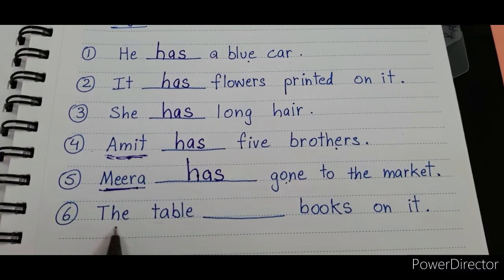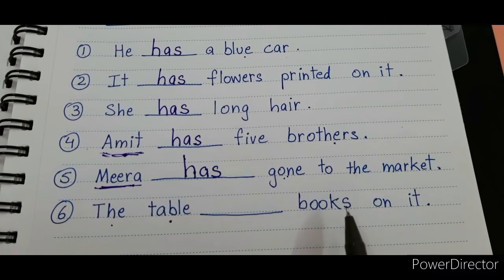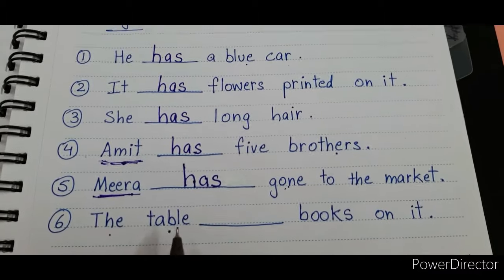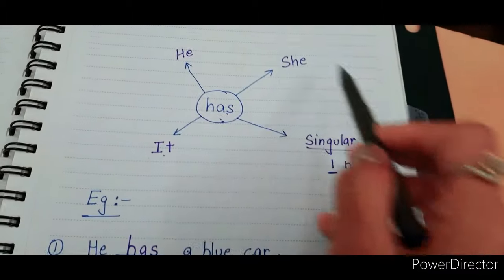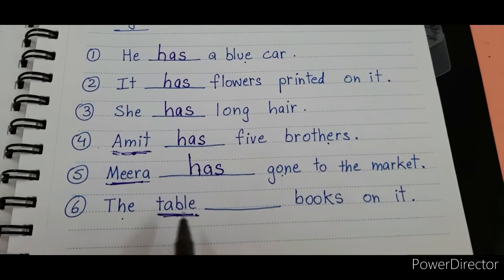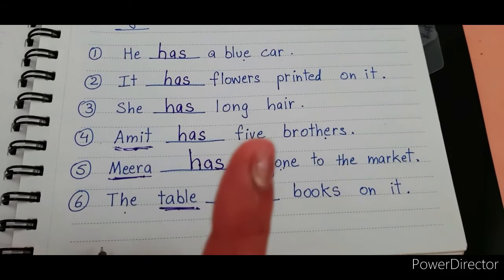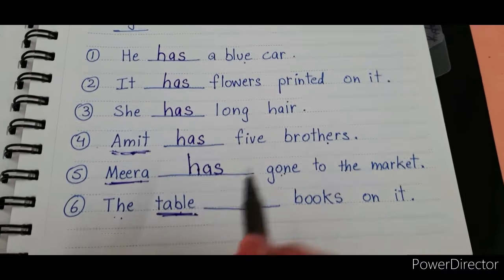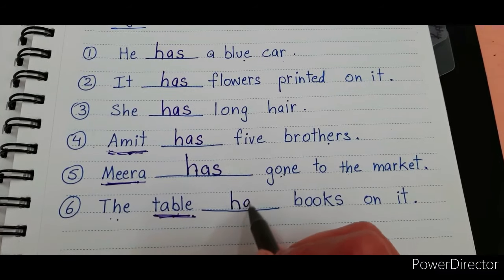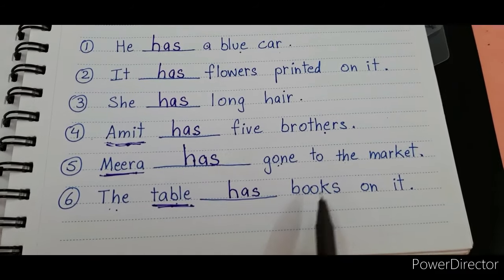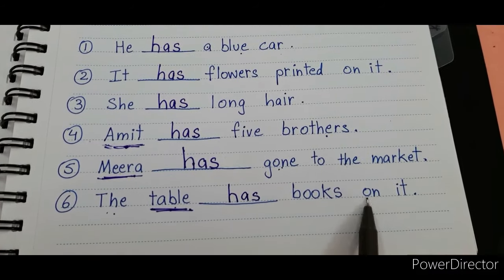Next: 'The table ___ books on it.' The word 'table' is not in our pronoun list, but 'table' is a noun — the name of a thing — and how many tables are there? Only one. So we use 'has': 'The table has books on it.'